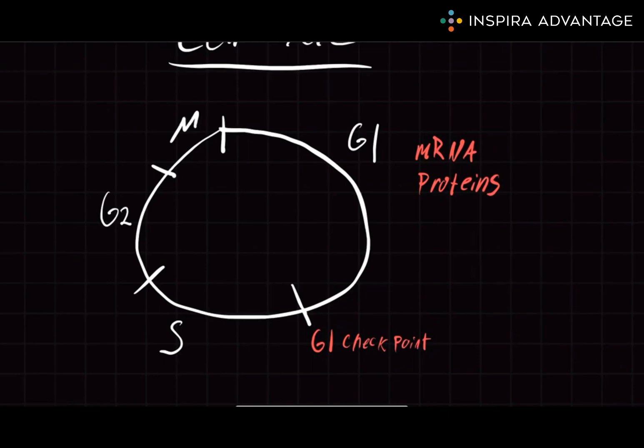One of three things will happen from here. The cell will check to see if it has enough mRNA and protein for mitosis. And if it does, then the cell will continue to go on and divide. If it doesn't, the cell will postpone dividing and work on making more mRNA and protein until there's enough to divide.